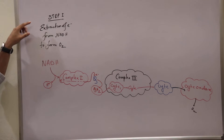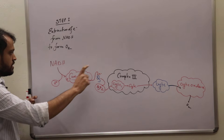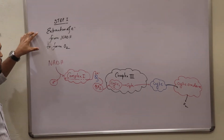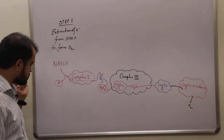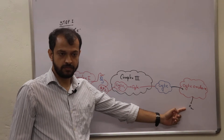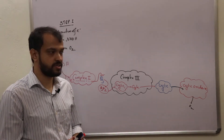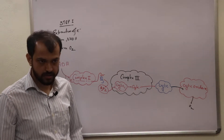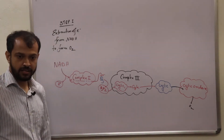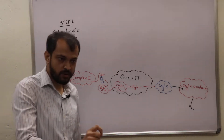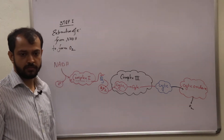We are discussing Step 1: extraction of electrons from NADH to form O2. I have represented this statement in its simplest form. You cannot decipher anything out of this because if I tell you that all these things are happening in the inner mitochondrial membrane, you still cannot decipher what is going on and where it is going on.